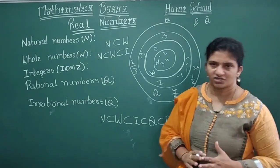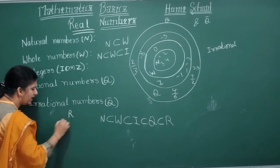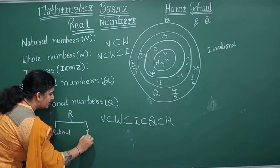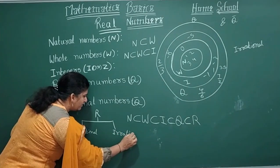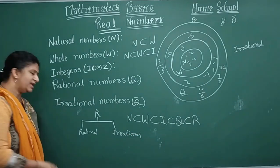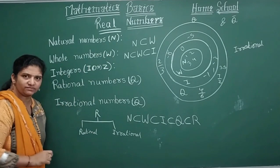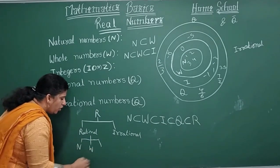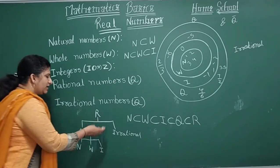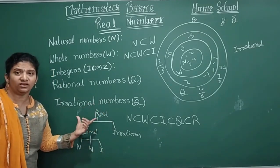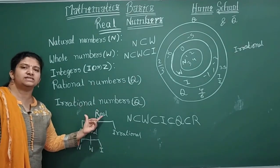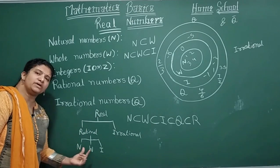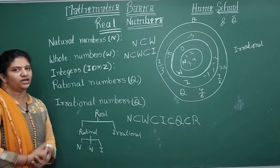Real numbers is the head of the family of numbers. Real numbers includes rational and irrational. Within rational numbers, natural numbers, whole numbers, and integers are all part of rational numbers. Rational numbers is further classified into: natural numbers, whole numbers, and integers.